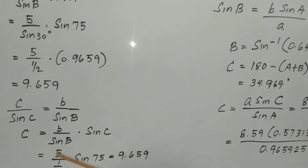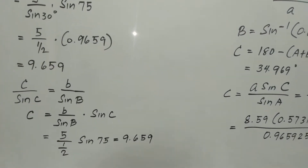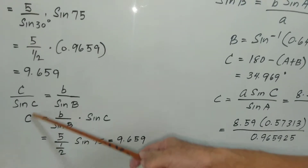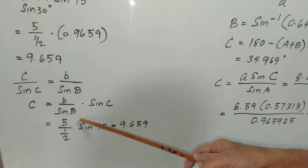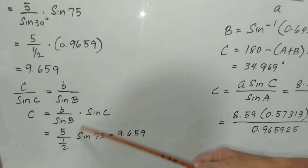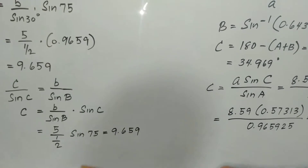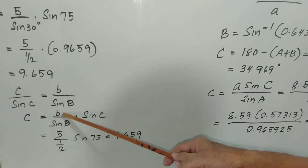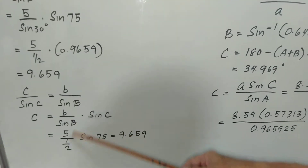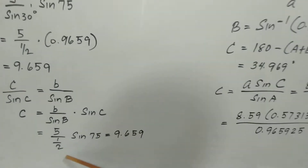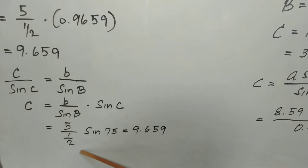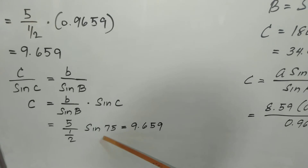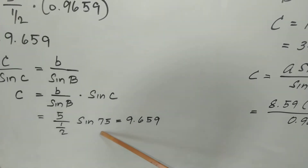To get side c, side c over sine of angle C equals b over sine of angle B. Similarly, we have 5 over sine of 30 degrees, times sine of 75, which is also 0.9659, giving us side c equals 9.659.